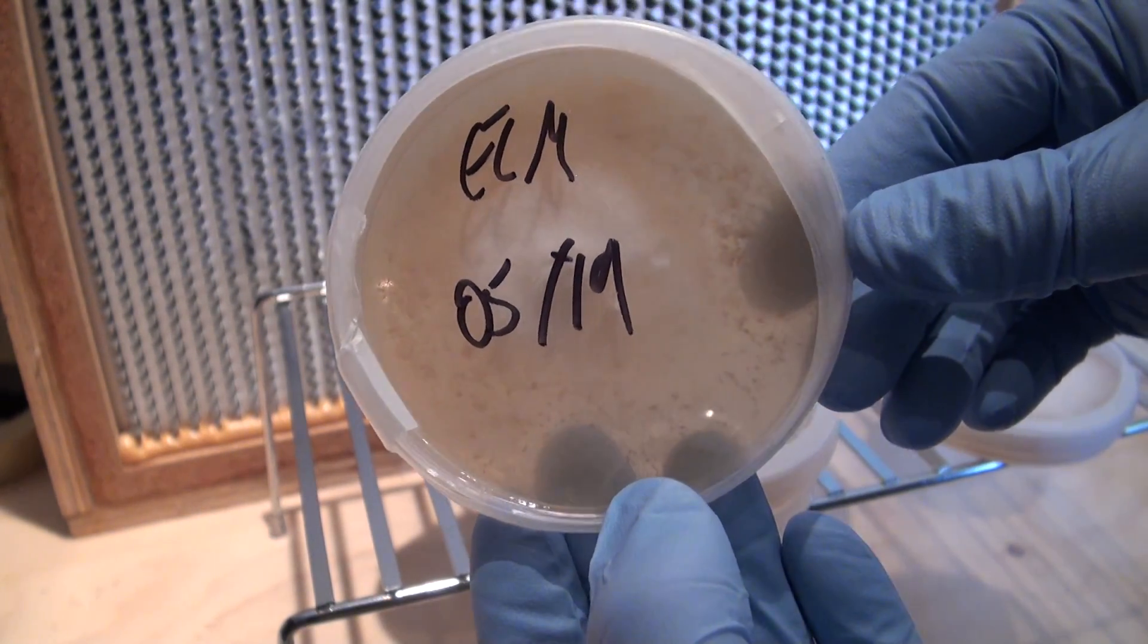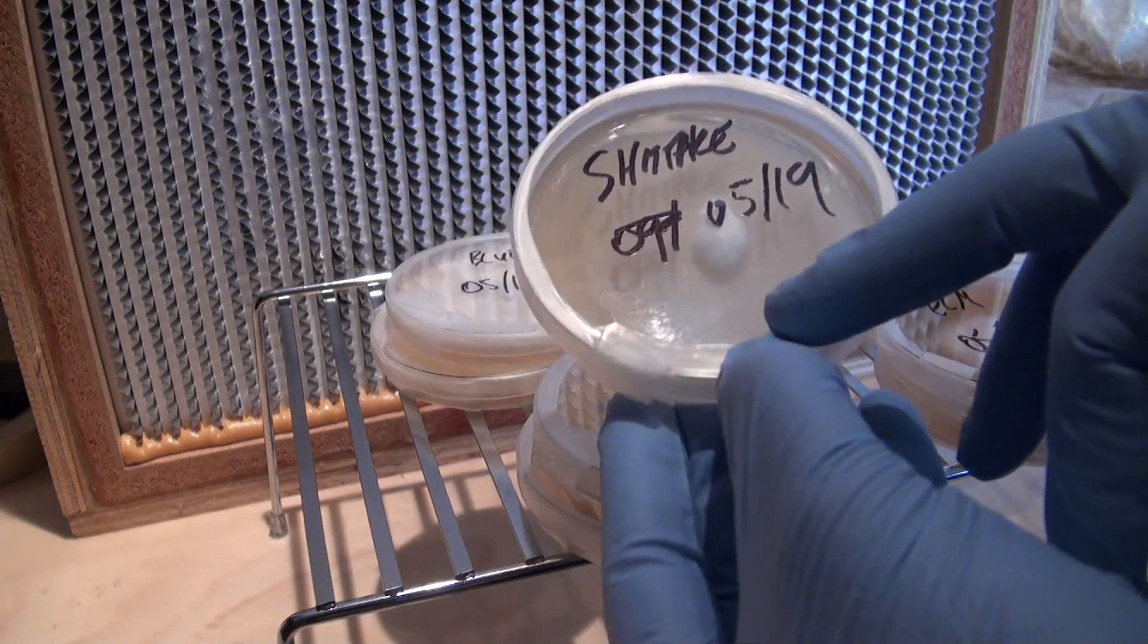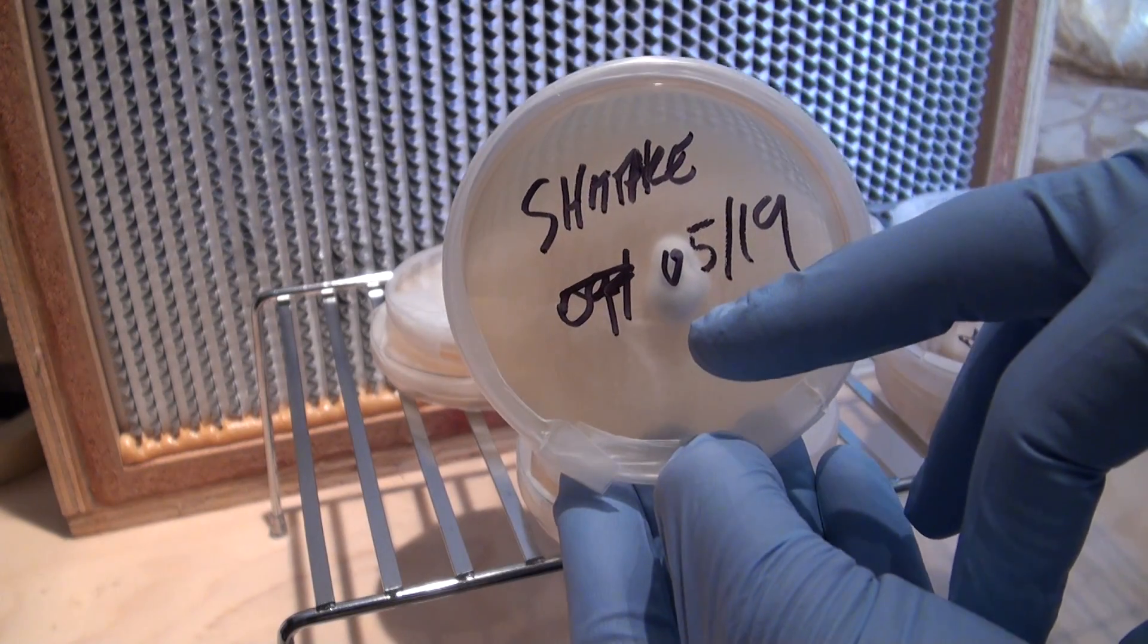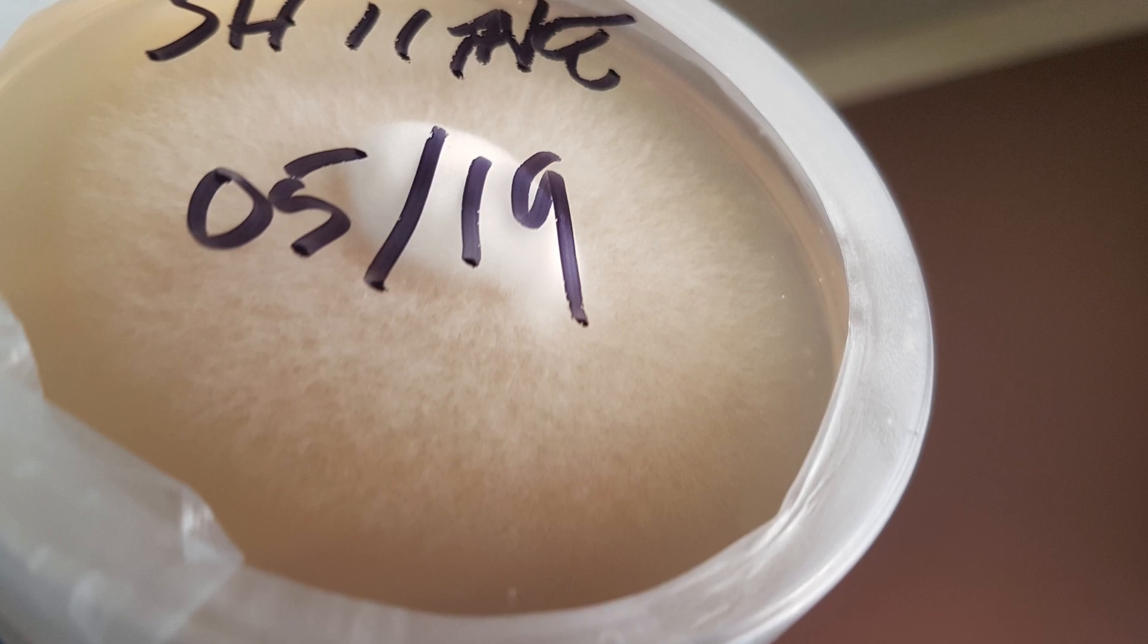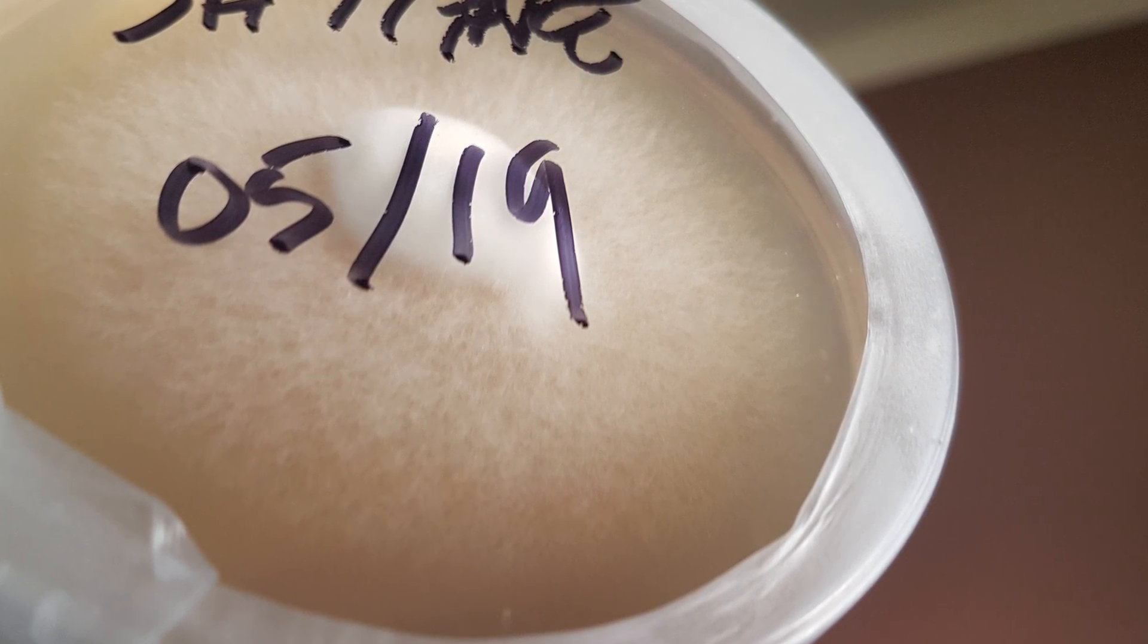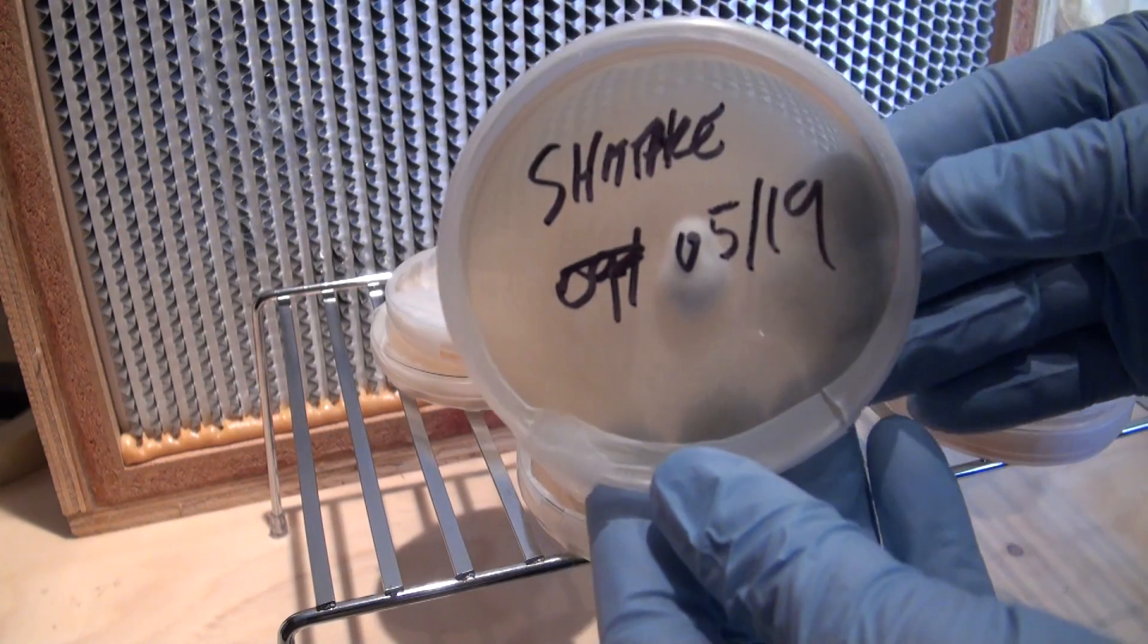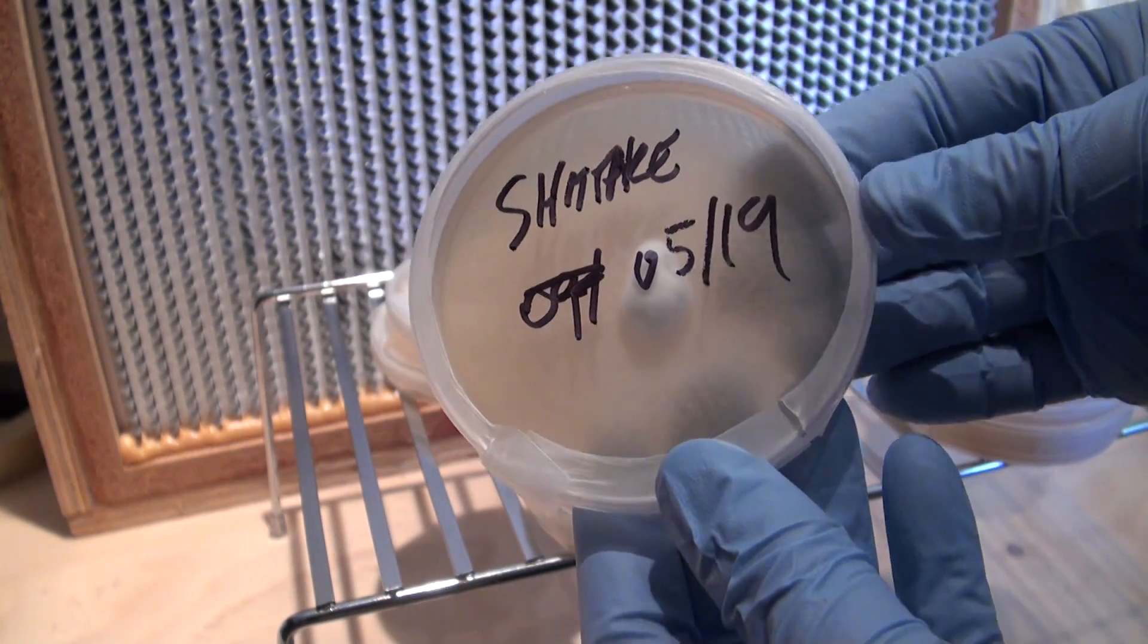And here we have some shiitake mycelium. You can see it looks like just kind of one ball right in the middle of the wedge where it's fluffed out. But actually, if you look closer at the plate, you can see that it's kind of thin and wispy but has worked its way almost entirely throughout the plate. These have only been on agar for about 11 days now, but the shiitake has almost worked its way through the plate even though you can't really see it.